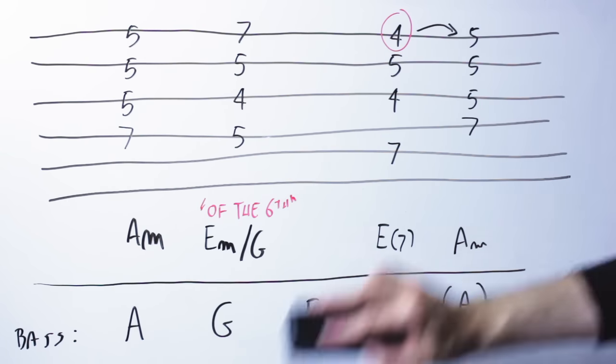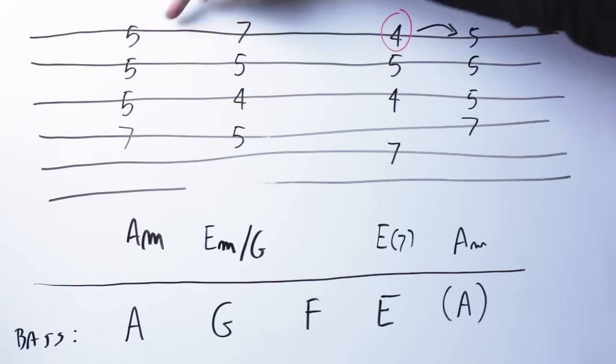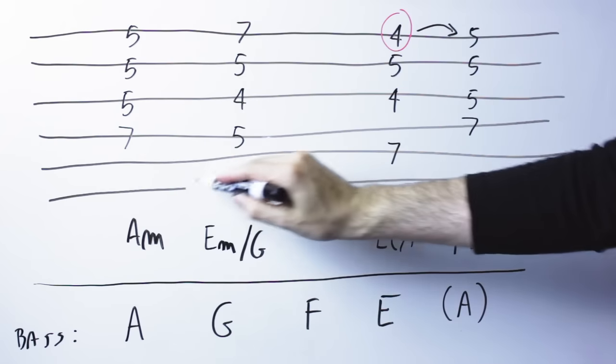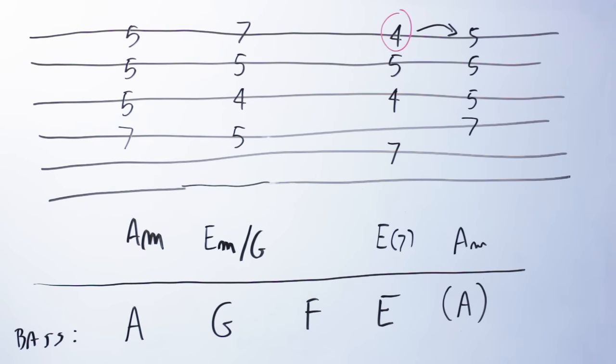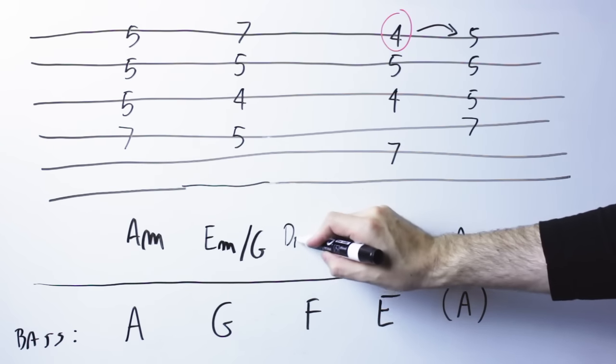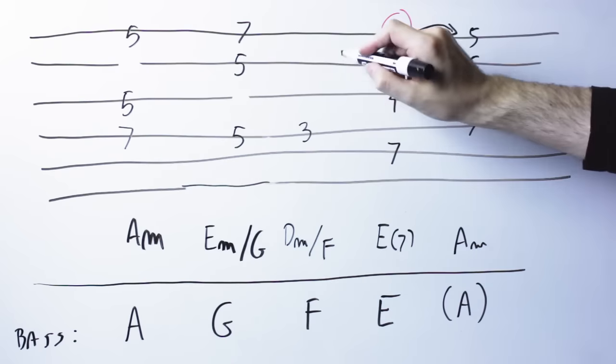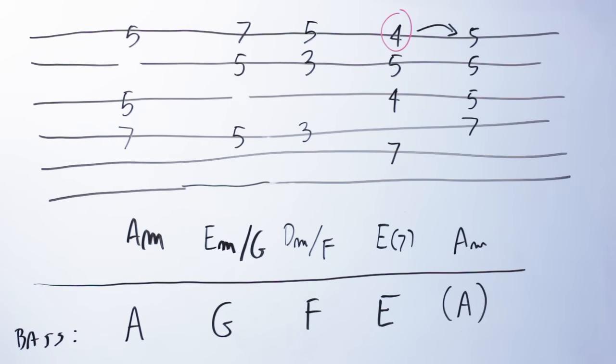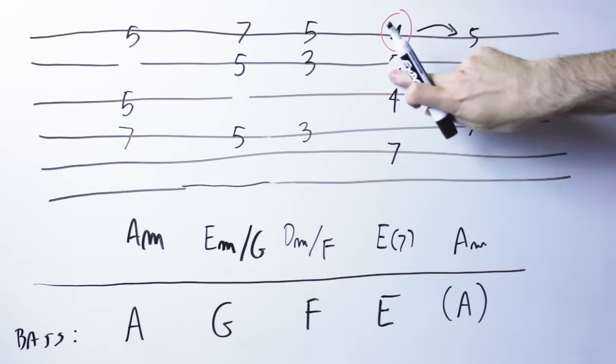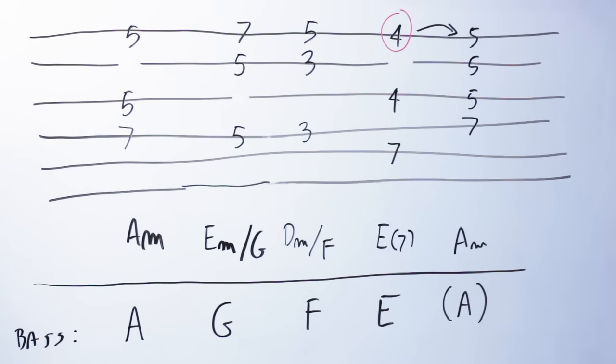So they will have a root position chord on the A, a chord of the sixth, which is just a first inversion chord on the G, another chord of the sixth on the F, so in this case a D minor with a bass of F, and then they will play the E, and back to the A.